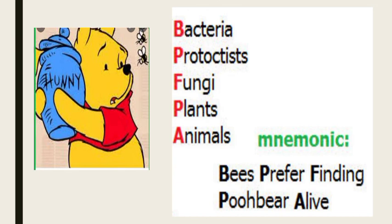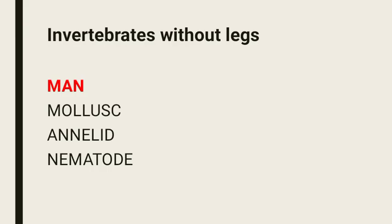To learn the five kingdom system of classification, remember the sentence 'Bees Prefer Finding Poopier Alive': B for Bacteria (Kingdom Monera), P for Kingdom Protista, F for Kingdom Fungi, P for Kingdom Plantae, and A for Kingdom Animalia. Invertebrates without legs can be remembered by the name MAN: Mollusk, Annelid, and Nematode.